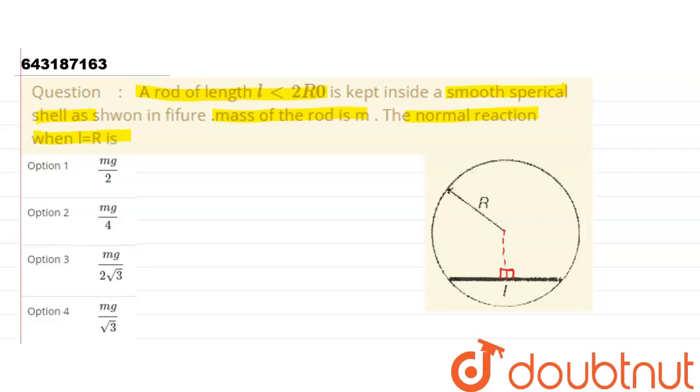Now let us draw both contact forces, that is the normal forces. As there are two contact points, there will be two normal forces acting on this rod. As we know that normal is perpendicular to the surface, we can say that this normal will pass through the center, and again this normal will also be passing through the center.